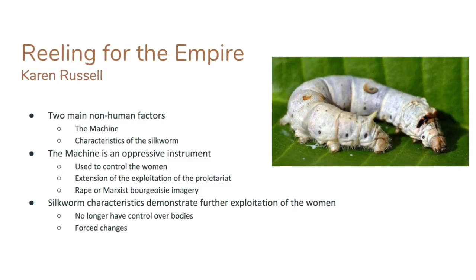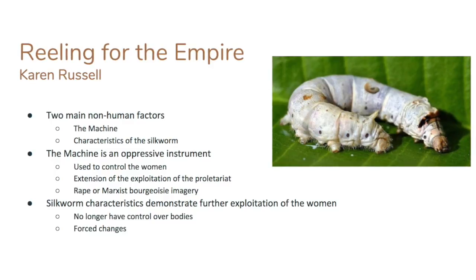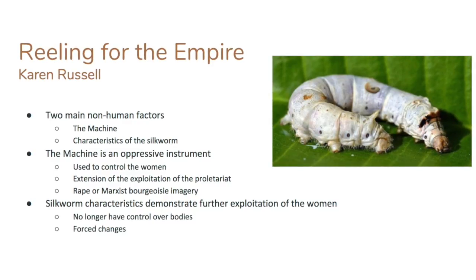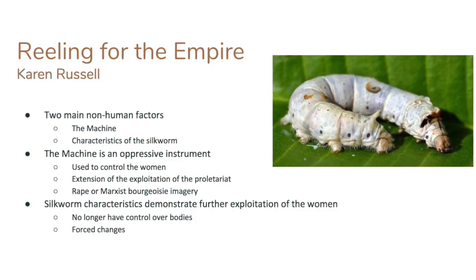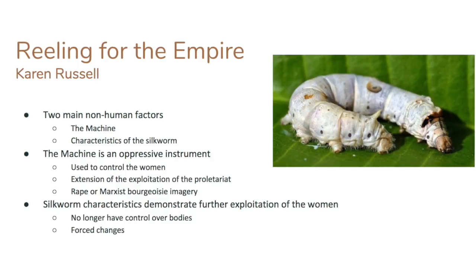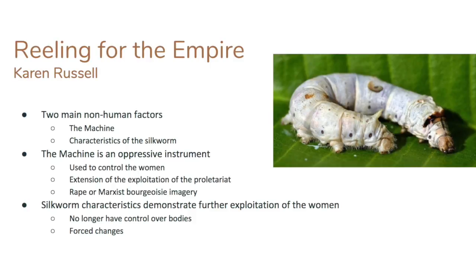The second characteristic are the silkworm characteristics of the Keiko Joko, which further demonstrate the exploitation of the women. As a result of drinking the tea, they no longer have control over their bodies as they grow silkworm-like characteristics, including fur and eventually wings, as they develop into silkworm moths. These changes are forced upon the women — they have no choice and there's no way to stop the process. So you can see this further exploitation and oppression of the women in the silkworm characteristics.